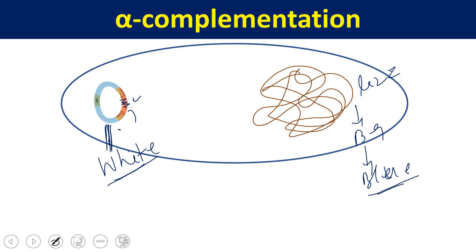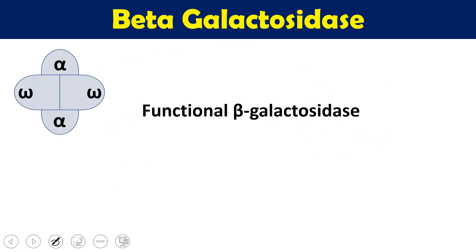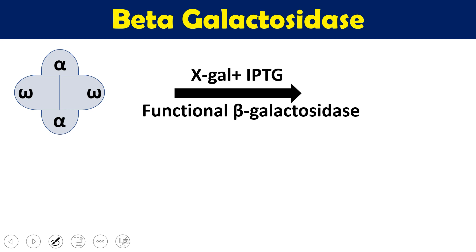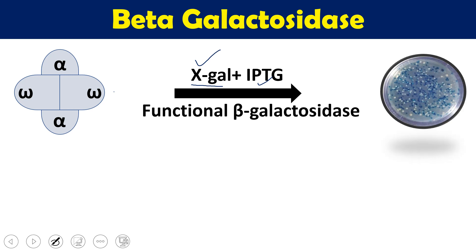To overcome this problem, we use the beta-galactosidase alpha complementation process. First, we need to understand what beta-galactosidase is and how it works. Beta-galactosidase is an enzyme involved in lactose metabolism. It has 4 different subunits — it is a tetramer of 2 alpha and 2 omega subunits. If bacteria have this functional beta-galactosidase, it metabolizes X-gal (expressed in the presence of IPTG) and produces a blue colony.